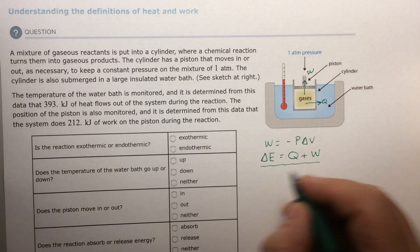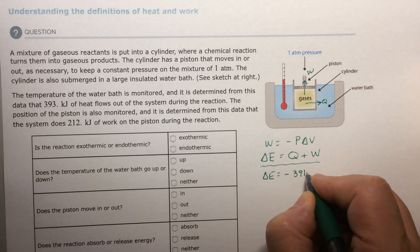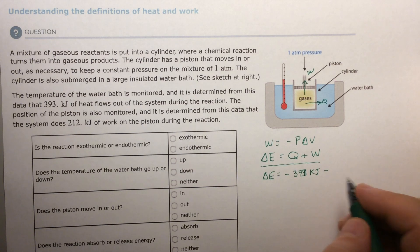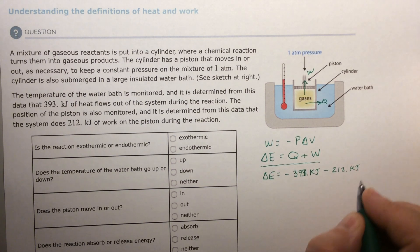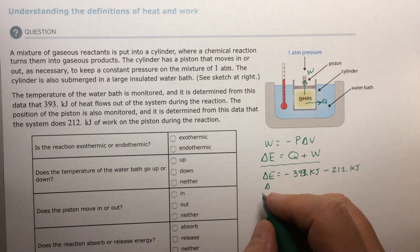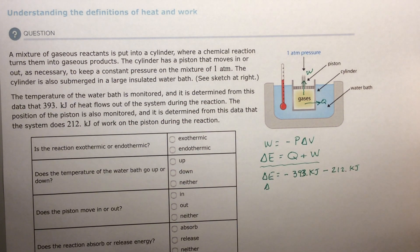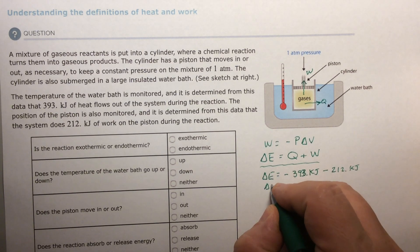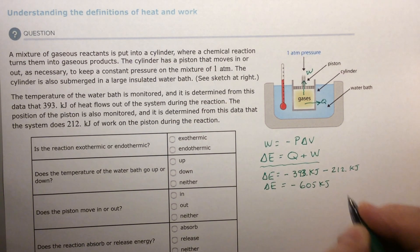Now just fill it in. It tells you the numbers. The change in energy equals minus 393 kilojoules and then minus again, since work is also minus, 212 kilojoules. So your change in energy, what is that change in energy going to be? 605. Change in energy is equal to negative 605 kilojoules. So here's your math.